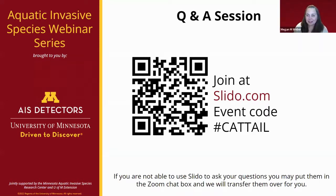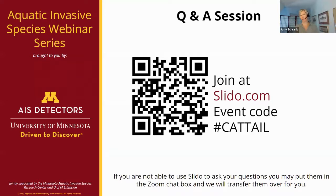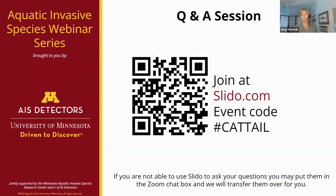What happens to the cut cattail tops during removal? It depends on where you are and what the rules are, but typically we're putting that on land away from water so you don't want all the nutrients leaching back into the lake. In some cases we removed it far away depending on the property. At Voyageurs National Park, they're experimenting with putting it on shore and reseeding with a native plant mix, using the decaying cattail as a nutrient source for native plants. When you remove it, there's biomass and you need to have a plan to deal with it.